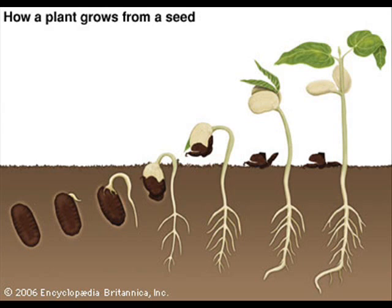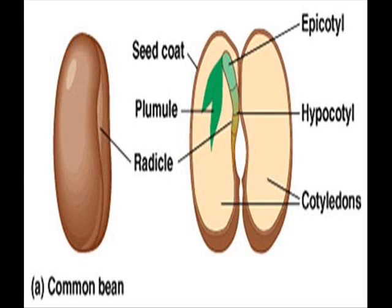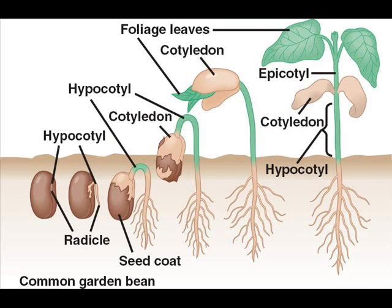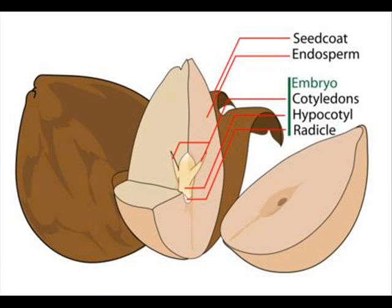The seed contains an immature plant called an embryo that resembles an adult plant, complete with leaves and a root. The seeds' leaves are called the cotyledons. Seeds that contain one embryonic leaf are known as monocotyledons, or monocots. Seeds with two embryonic leaves are termed dicotyledons, or dicots. The food found in the seed which nourishes the embryonic seedling during early development is known as the endosperm.